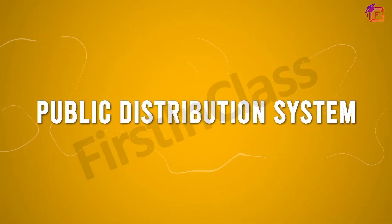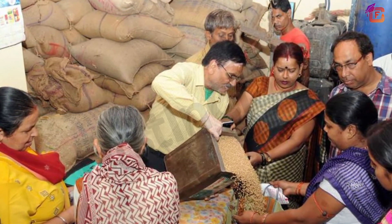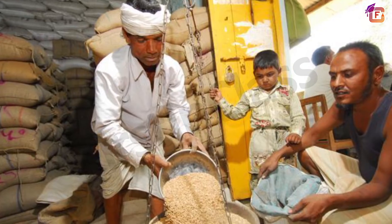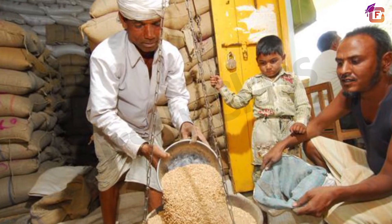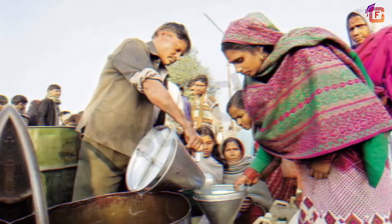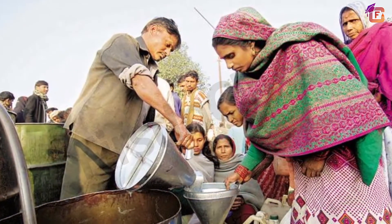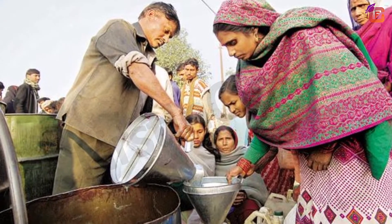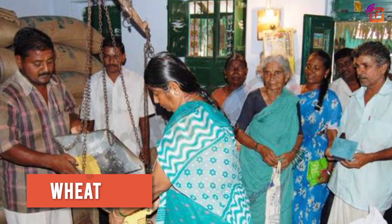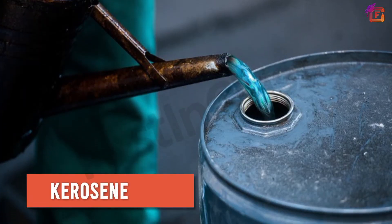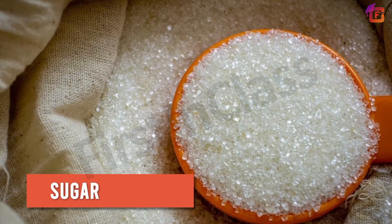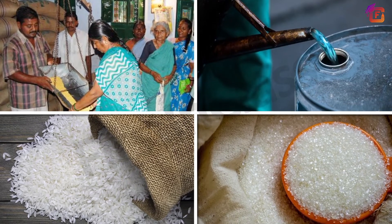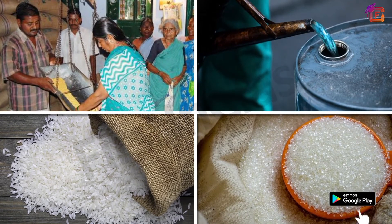The third is the public distribution system. The public distribution system is a government-sponsored chain of shops entrusted with the work of distributing basic food and non-food commodities to the needy sections of society at very cheap prices. Wheat, rice, kerosene, and sugar are a few major commodities distributed by the public distribution system.